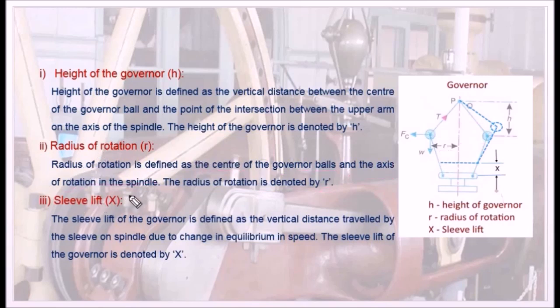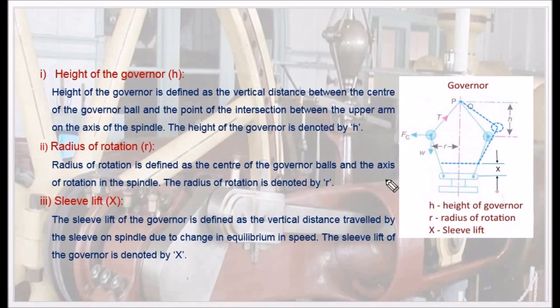Now the third part. Sleeve lift. The sleeve lift of the governor is defined as the vertical distance travelled by the sleeve on spindle due to change in equilibrium speed. The sleeve lift of the governor is denoted by x. We very well know that at equilibrium speed the sleeve maintains a constant position. Say at this position. Now let us mark this as our reference equilibrium position. If there is a change in equilibrium speed then the sleeve will travel on the spindle to certain distance according to the development of centrifugal force on these balls. It may be either up or down. That distance travelled by the sleeve on the spindle is called sleeve lift. I hope you would have understood the point clearly.